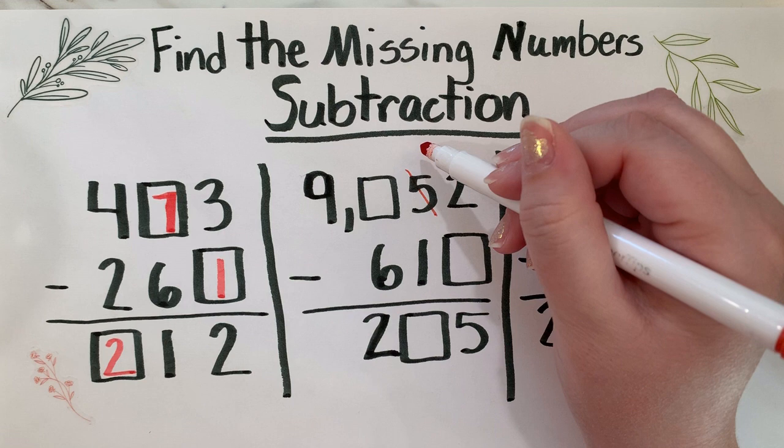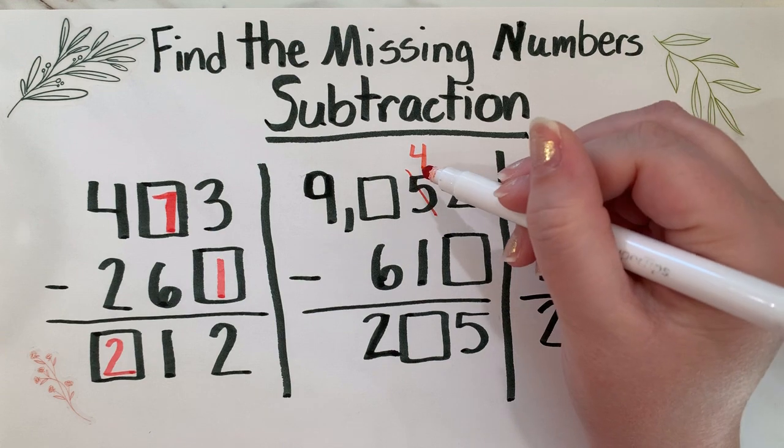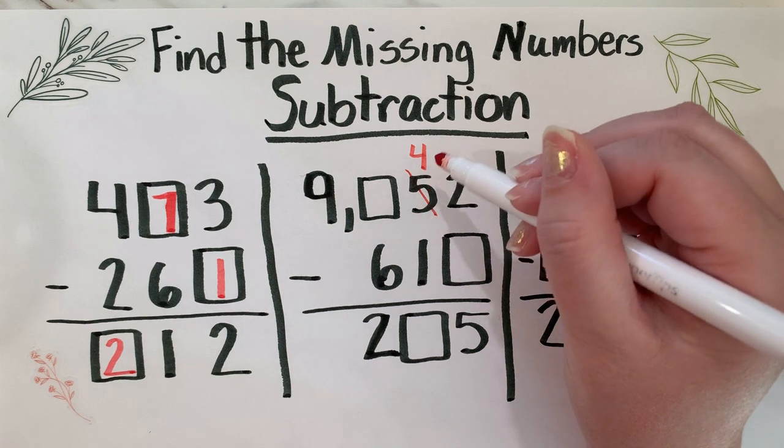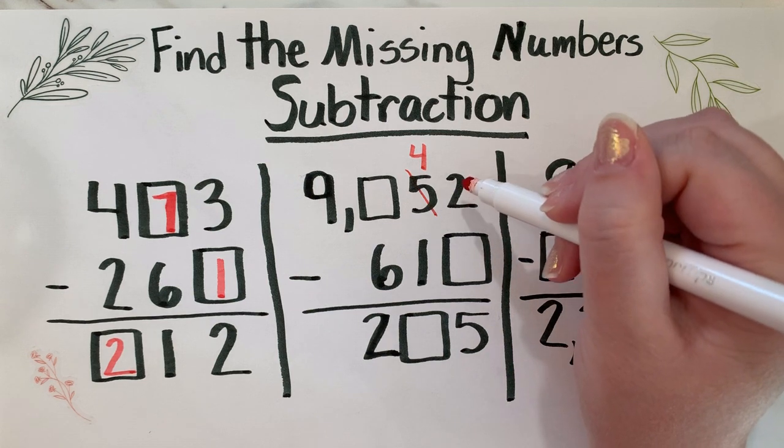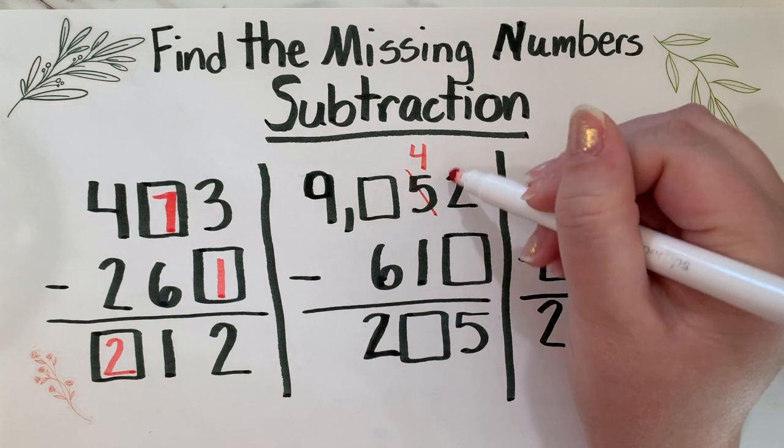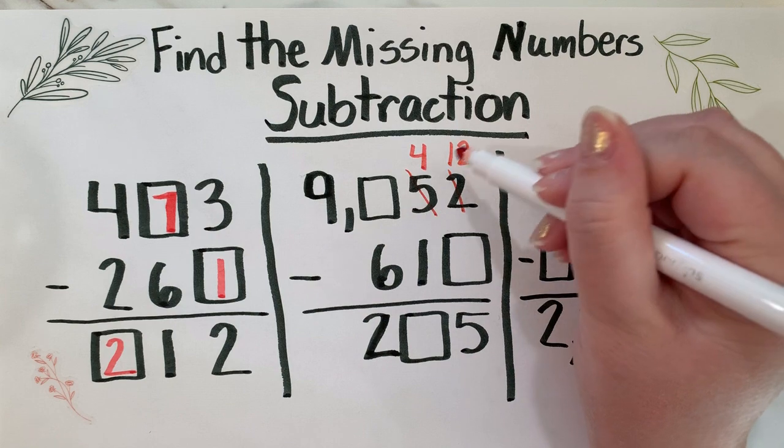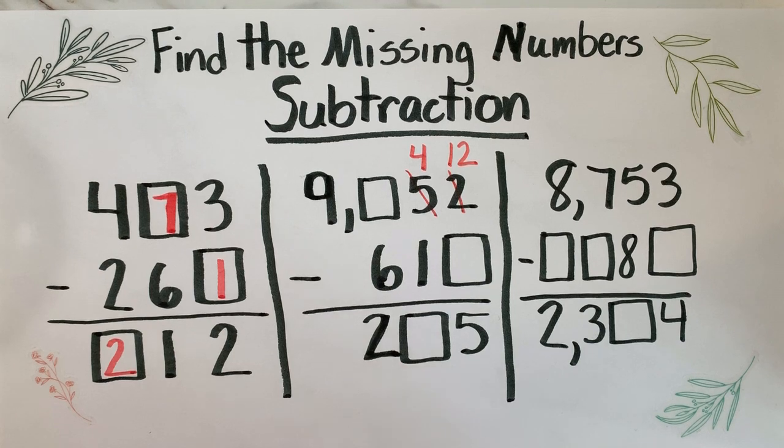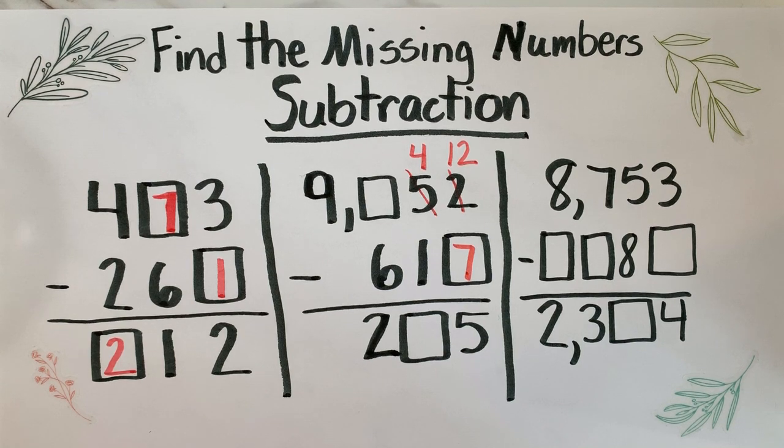So whenever we regroup, that means that we are taking from another place and giving it to the original place that we started with. So I'm going to take one group of ten from five tens, so now I have four tens. And then I'm going to take that ten, that one rod of ten, and we're going to break that rod apart into ten little pieces and give ten ones to the ones place. Now what's ten ones plus two? You said twelve, that is absolutely correct. Now that's our starting number. Twelve minus what will give me five? If you said seven, you are absolutely correct.